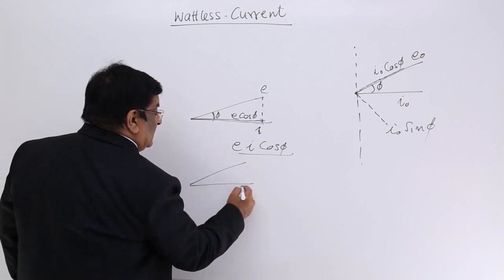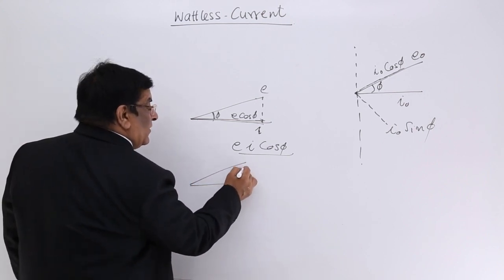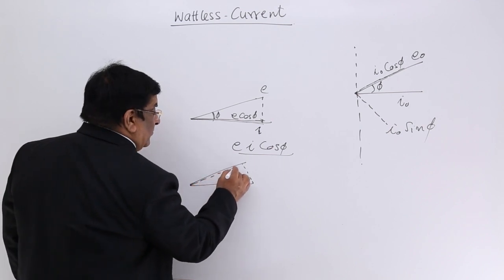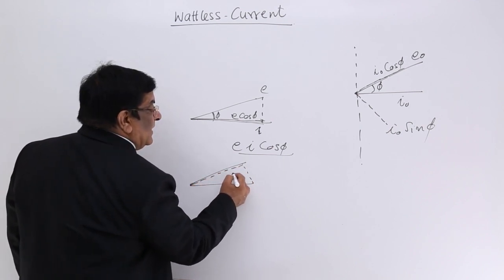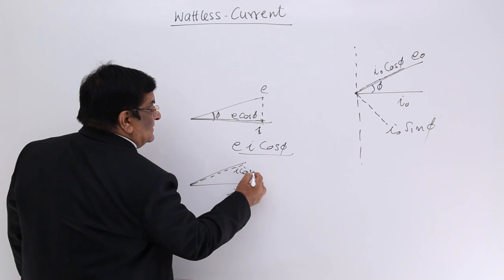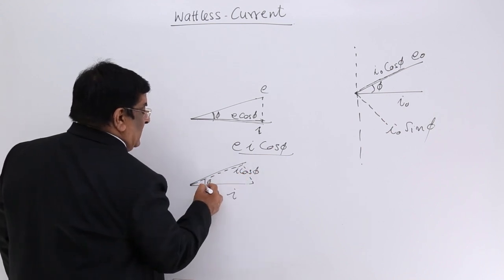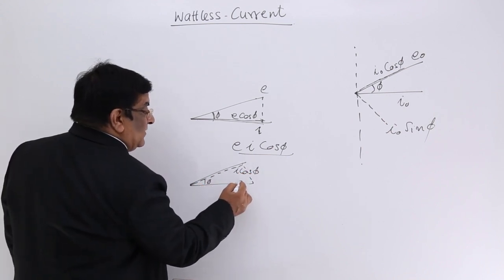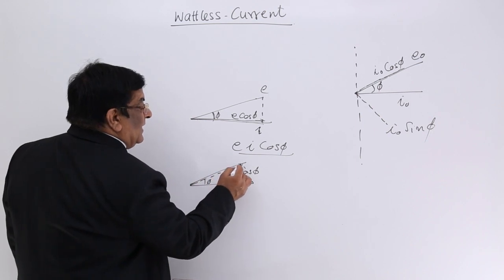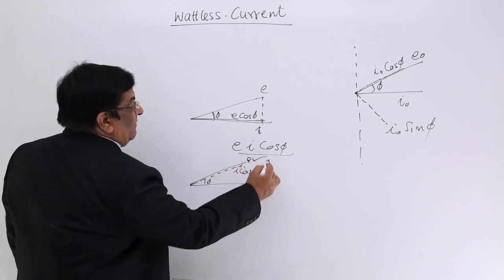If this is I, we can draw a component in this direction. How much is this? This is I cos φ. So if this is I, this is the component of I, and multiplication of these two gives the power.